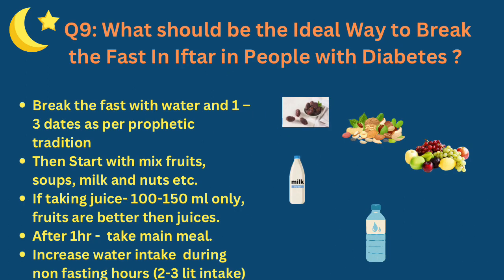What is the ideal way to break the fast at iftar for people with diabetes? Break the fast with water and 1 to 3 dates as per prophetic tradition, then start with mixed fruits, soups, milk, and mixed nuts. If taking juice, do not take more than 100 to 150 ml and prefer fresh juice — but whole fruits are better than juices. After one hour, take your main meal, which should be balanced and healthy. Try to drink at least two liters of water during non-fasting hours.